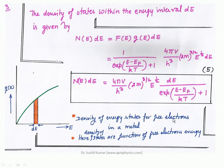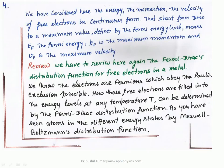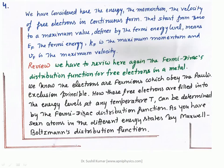The energy, momentum, and velocity of free electrons are in continuous form, starting from 0 to a maximum value defined by the Fermi energy level: EF is the Fermi energy, KF is the maximum momentum, and VF is the maximum velocity. We must keep this concept in mind when deriving these results. Now we review the Fermi-Dirac distribution function for free electrons in a metal. We know electrons are fermions which obey the Pauli exclusion principle, and how these free electrons fill energy levels at temperature T is determined by the Fermi-Dirac distribution function.